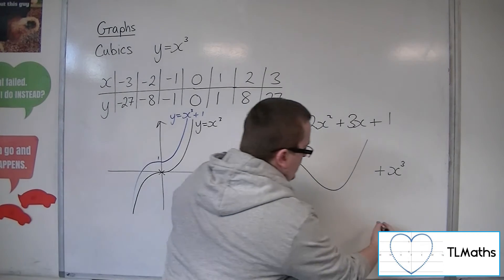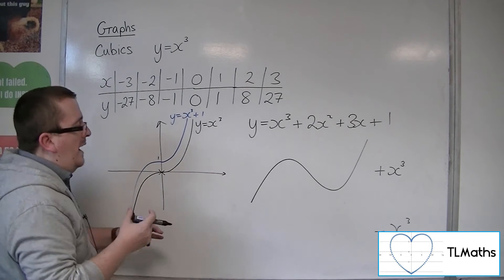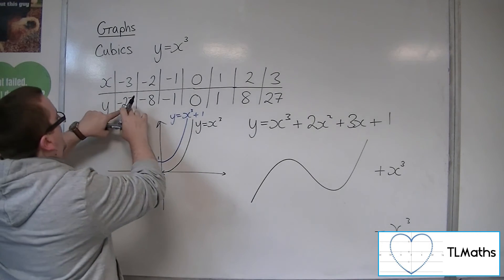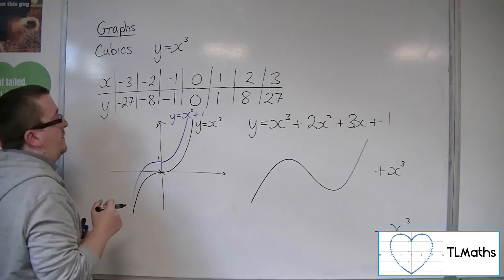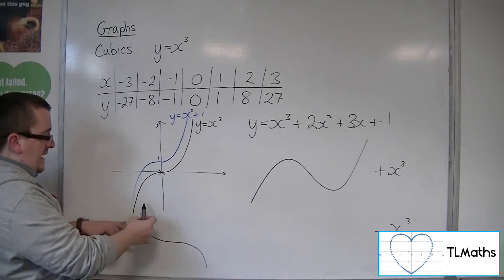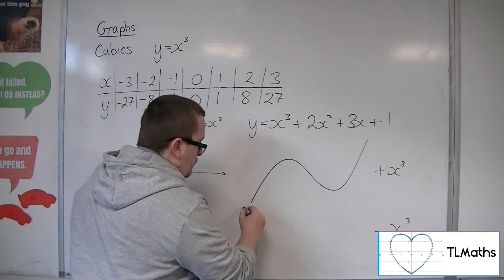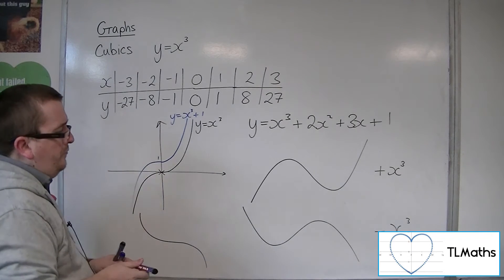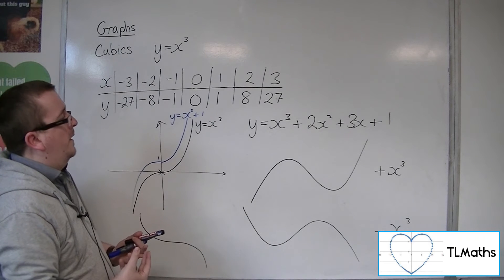If, however, it was a negative x cubed, then what happens is that if we'd substituted in our values, this would be 27, 8, 1, 0, minus 1, minus 8, minus 27. So actually our curve here would have looked something like this, coming down from the top left down to the bottom right, and in a similar way from the top left down to the bottom right. So that coefficient of the x cubed makes a difference.